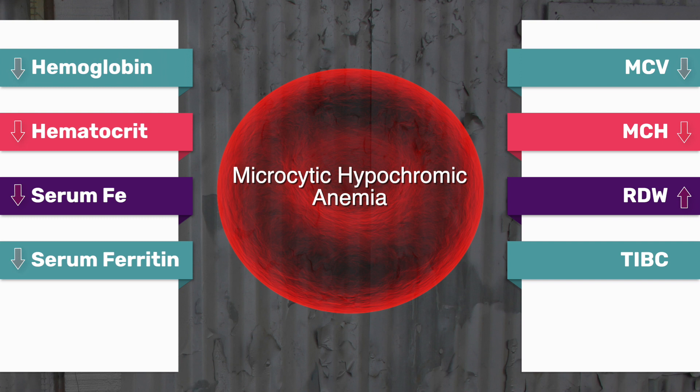The RDW will be elevated — greater than 15% is abnormal. And the TIBC, your total iron binding capacity, will also be elevated. Keep in mind your total iron binding capacity, your TIBC, has a reciprocal relationship with your iron count.